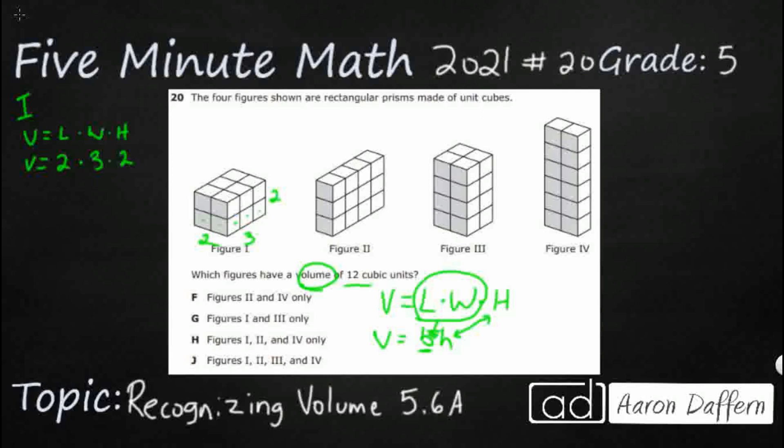Now, here's the interesting thing. I've got 2 times 3 times 2. How many cubes are visible? Well, I've got 1. This is 1 right here. So it's 2, 3, 4. Now I've got 5, 6, 7, 8, 9, 10. I've got 10 cubes that are visible.